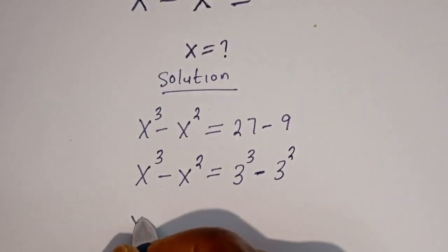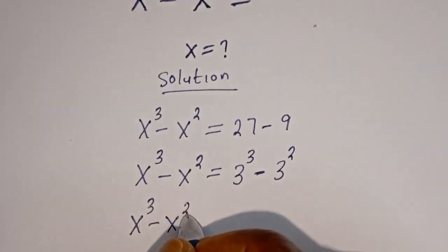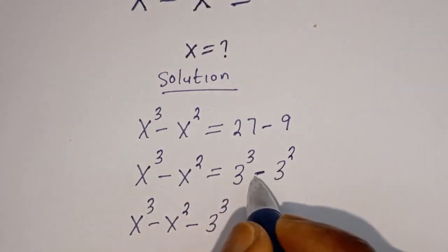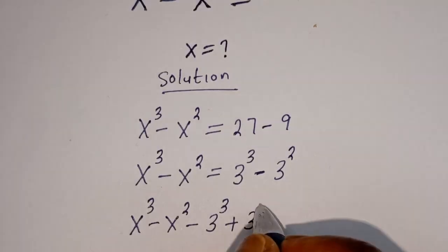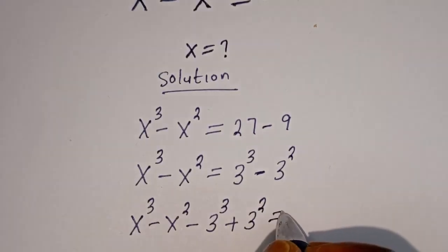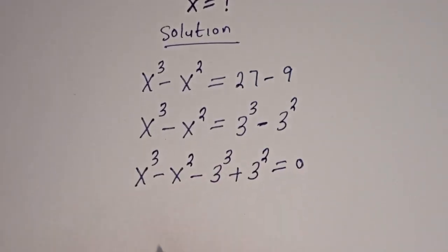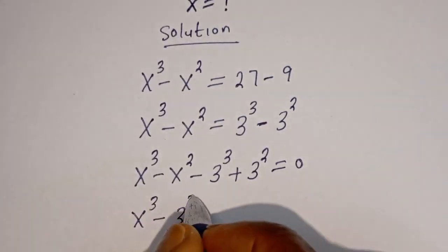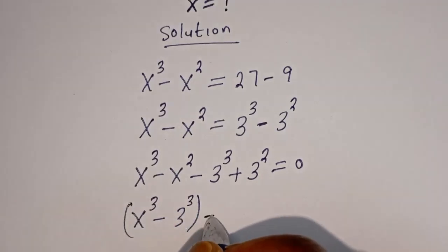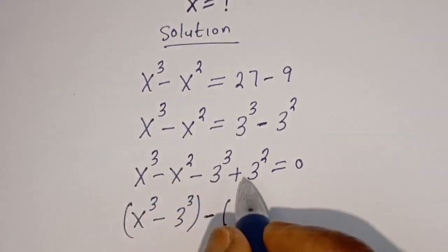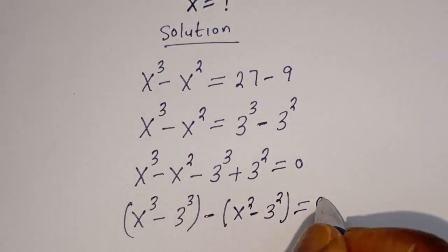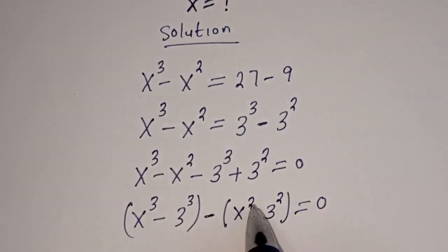Then we have S to the power of 3 minus S squared. If you bring this to this side it becomes minus 3 to the power of 3. Then if you bring this minus 3 squared to this side it becomes plus 3 squared, equal to 0. So we have S cubed minus 3 cubed, minus bracket S squared minus 3 squared, equal to 0.